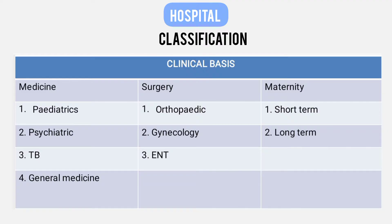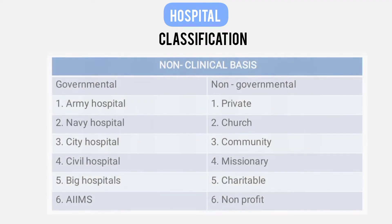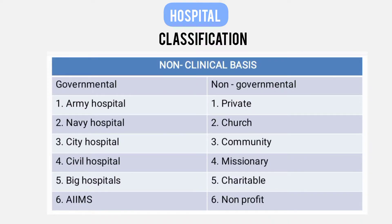On a non-clinical basis, hospitals are classified as government and non-governmental. Government hospitals include Army Hospital, Navy Hospital, and AIIMS. Non-governmental hospitals include church hospitals, private hospitals, community hospitals, missionary hospitals, charitable hospitals, and non-profitable hospitals.